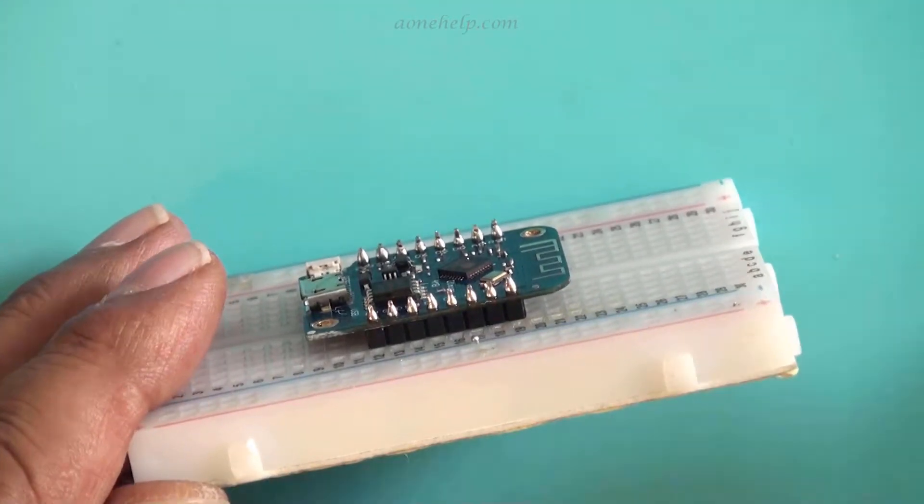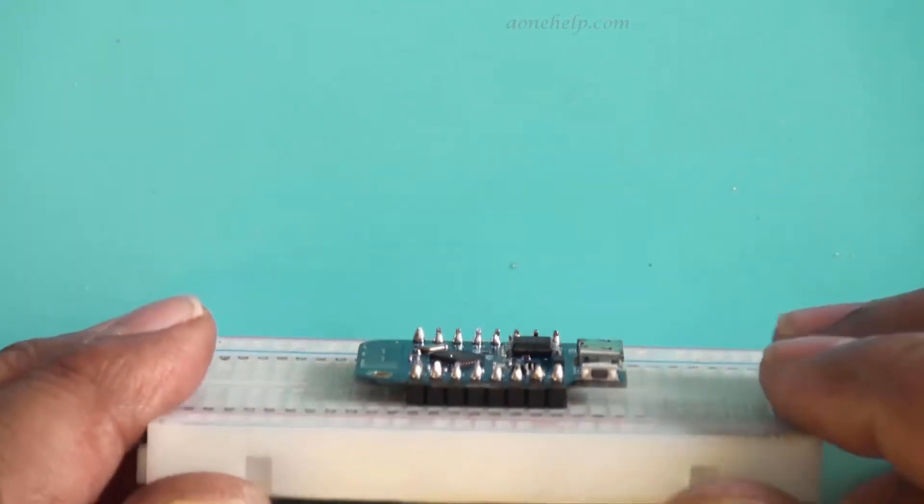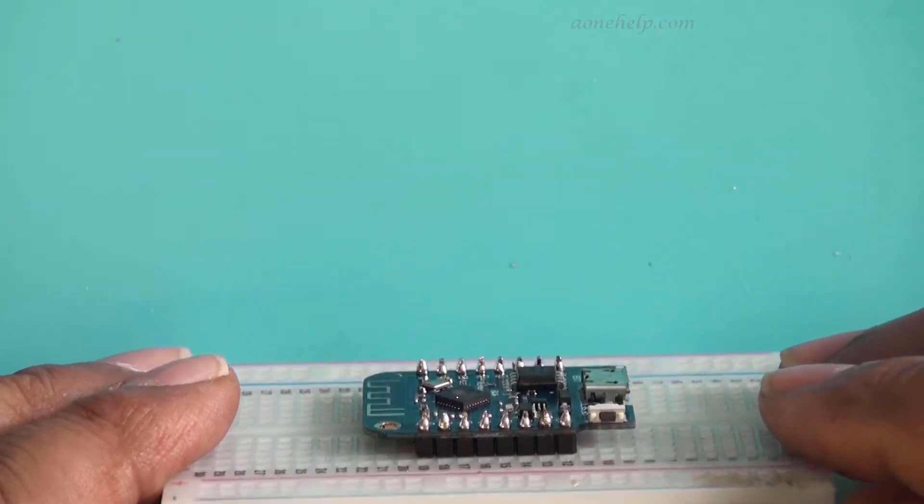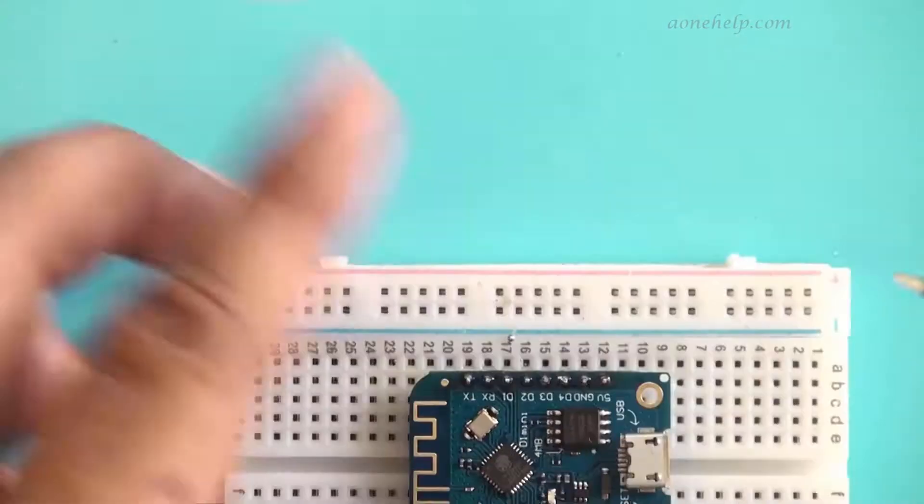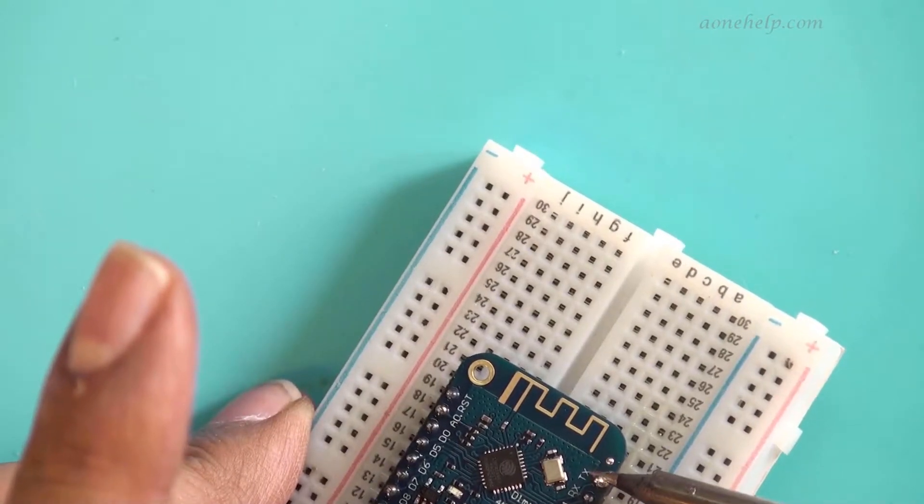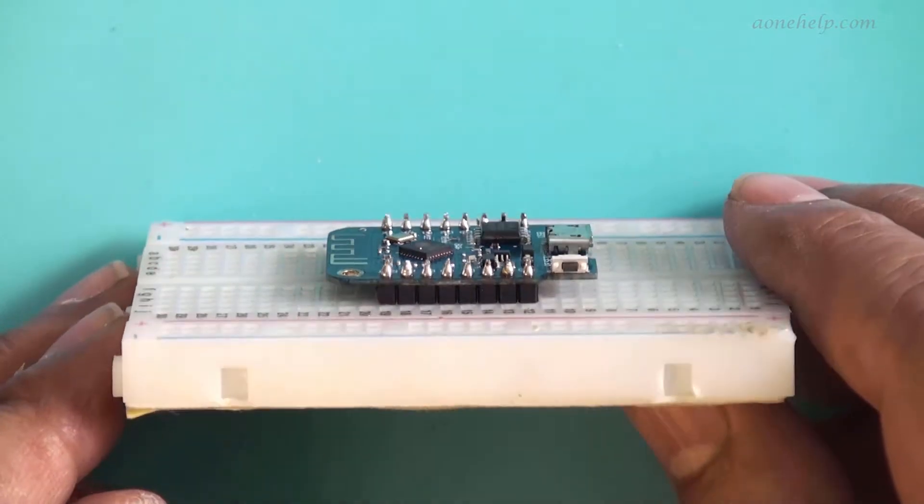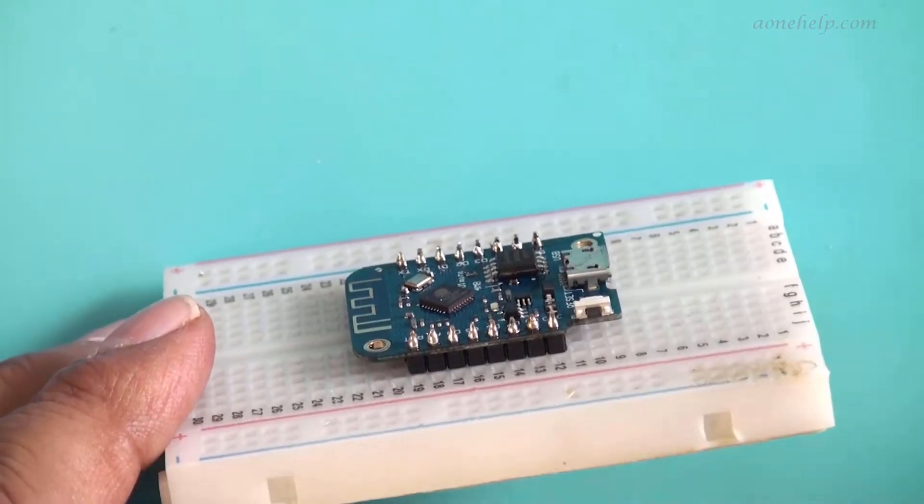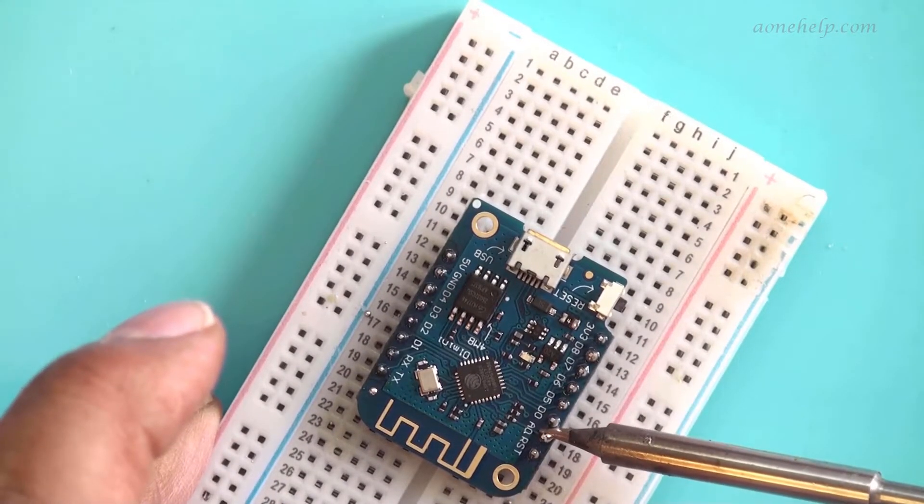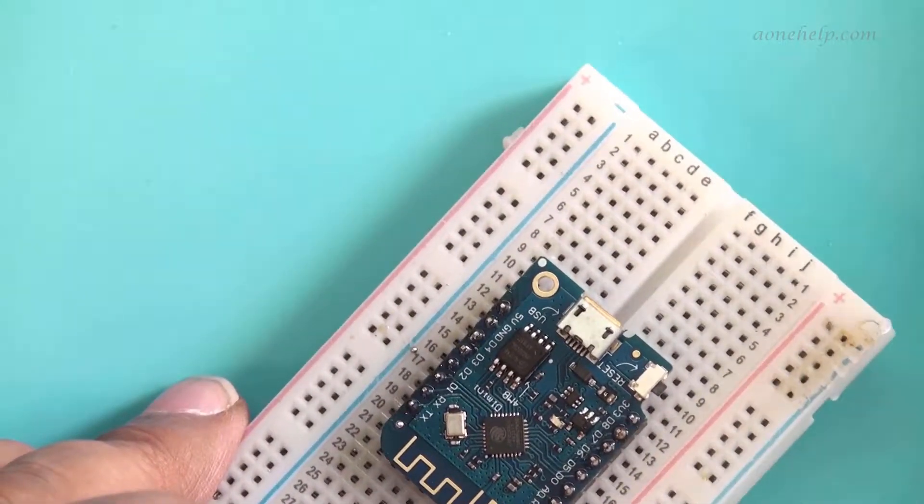If you want to buy any of these items, please use the link given in the video description. If you buy any product within 24 hours of clicking the link from Amazon and within 15 days from Banggood, we will get a small commission on your purchases. Rest assured, there will be no additional charges for you on purchases through these links. But this way, you can financially support our channel without spending anything.